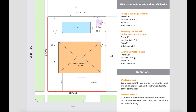Now let's look at swimming pool setbacks. Front: 75 feet — from the front we have 75 feet to the pool, so great. Interior side: 10 feet — the interior side has 23 feet, so perfect. Rear: 7.5 feet — great. Side street: 20 feet — and here we have exactly 20 feet, so that's good.